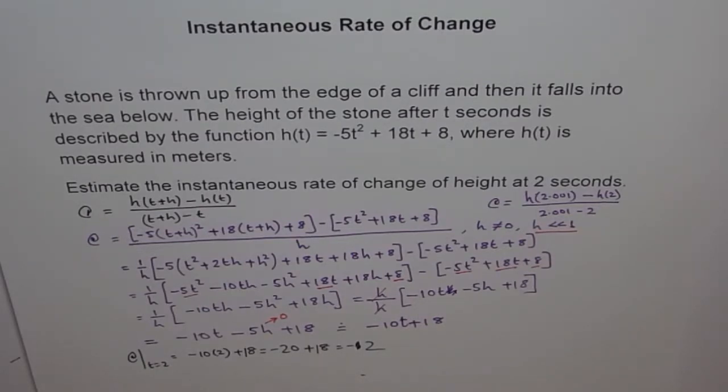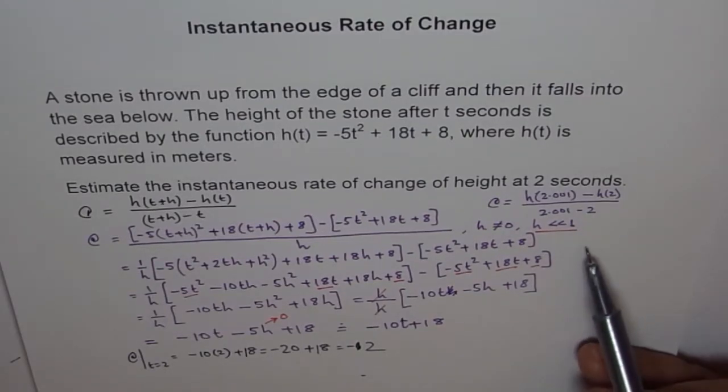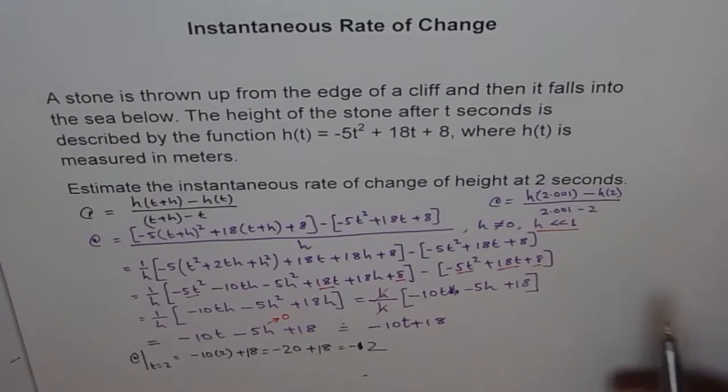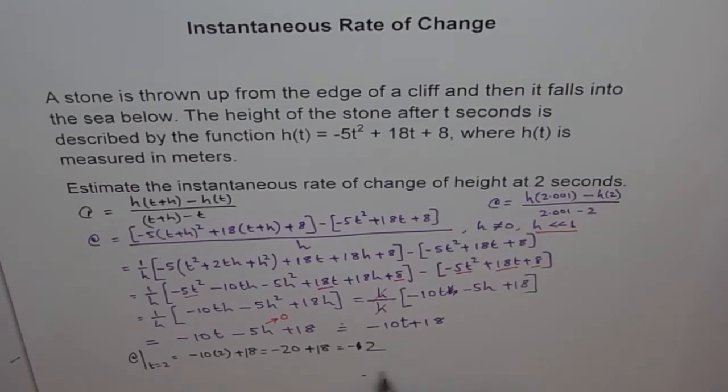How this method is good? This method is very good. Imagine, if I say, find instantaneous rate of change of height at t equals to 2, 2.5, 3, 3.5 and 4. Then, if you follow this method, you have to do those 4 calculations 4 times. Here, we do it once and next time, we say, well, what do you want?